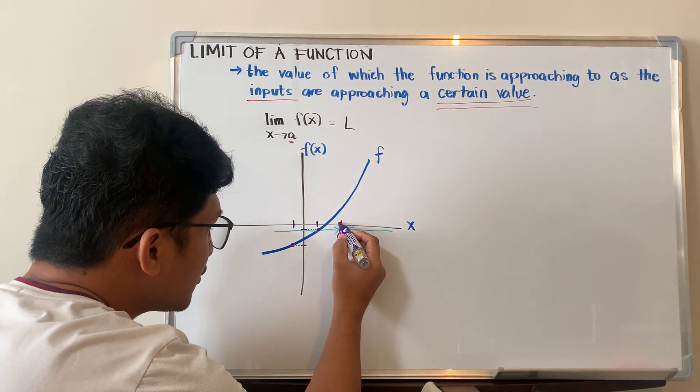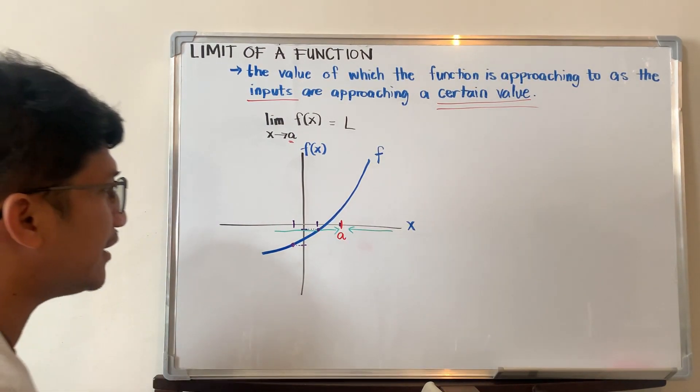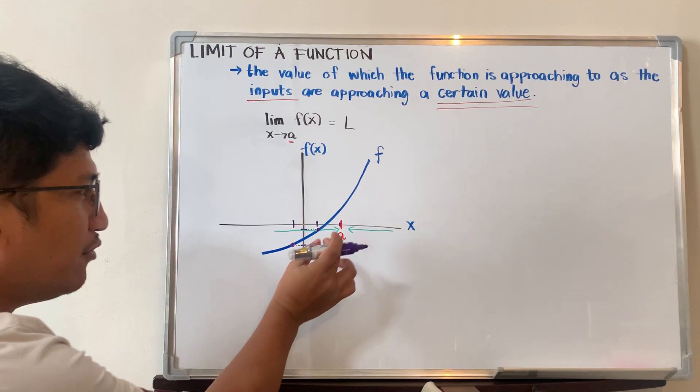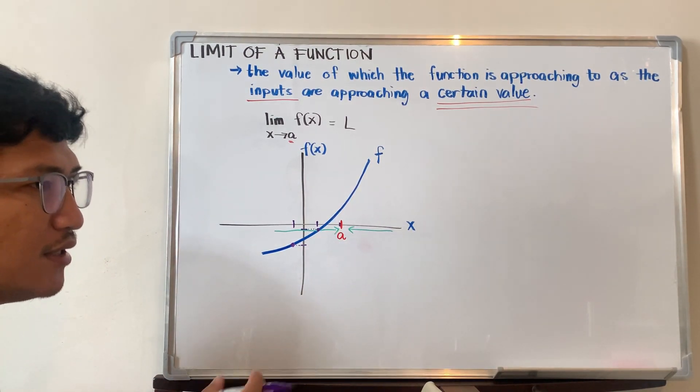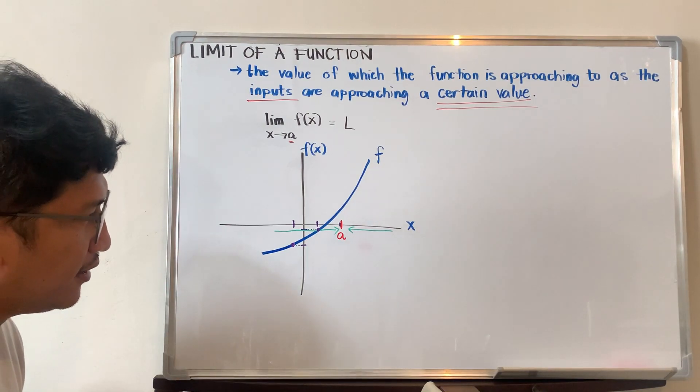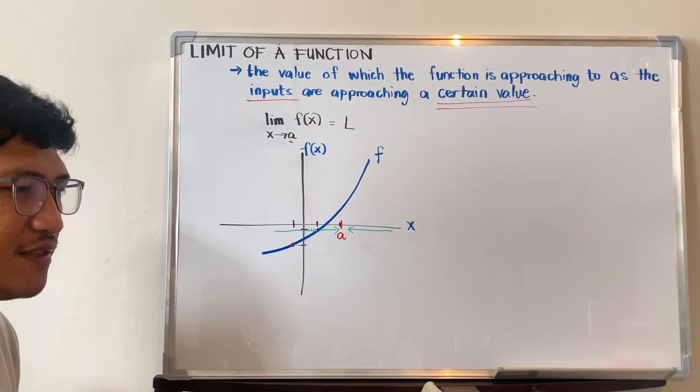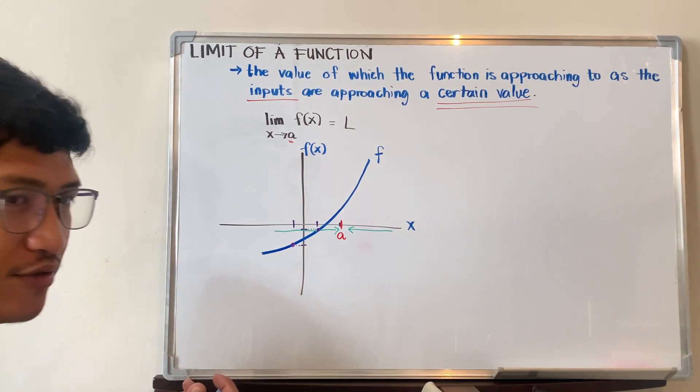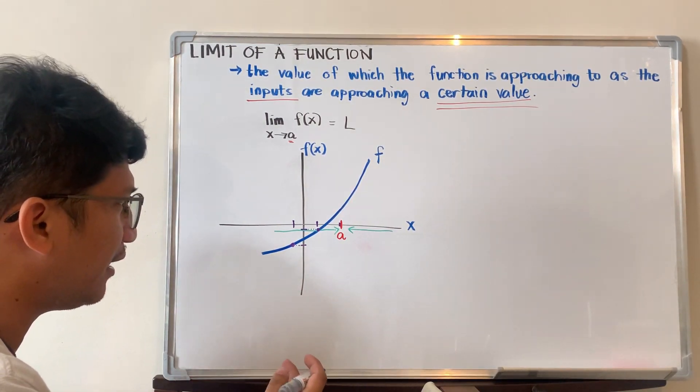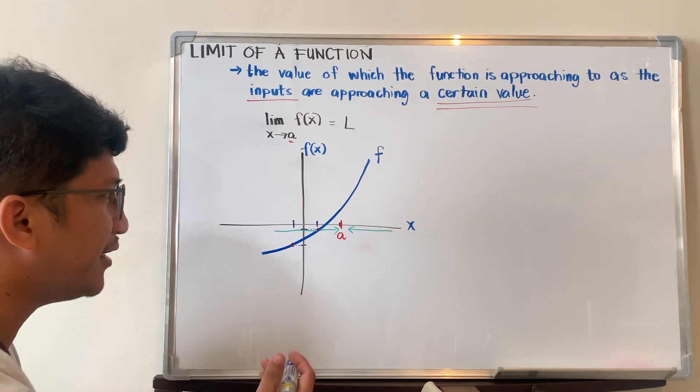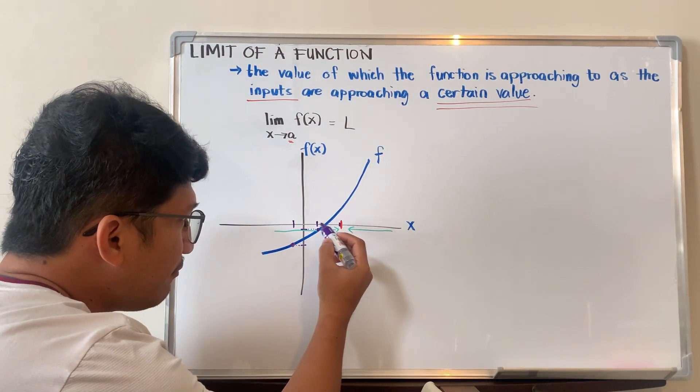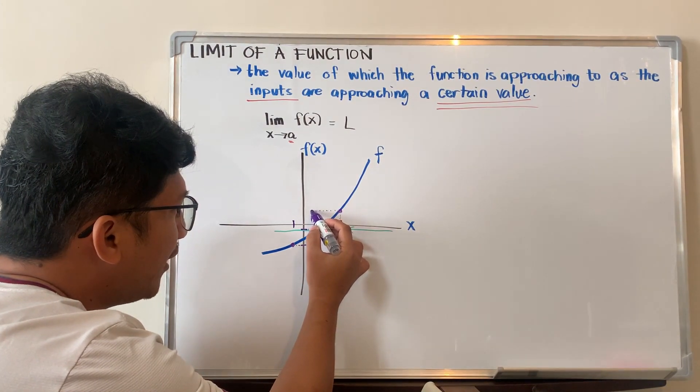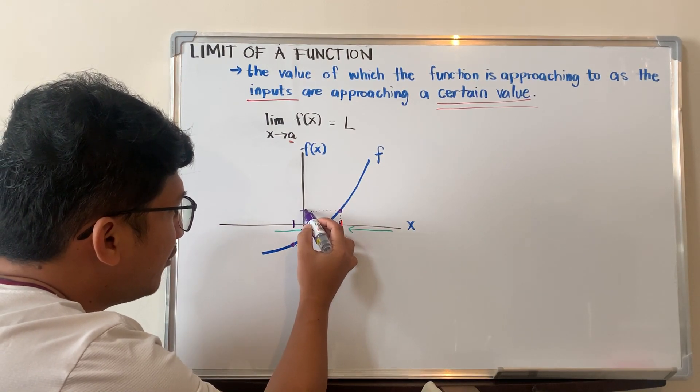Moving closer to a, as we're approaching to a, this value should be closer to a. If we use another value of x, then it represents another point here in the curve, and of course, another value of f of x, or simply y. And then moving closer, it should be closer, approaching, but it cannot be equal to a as I said. Then we have the third value, we have this point in the curve, and we have a certain value of y, or a certain value of f of x.